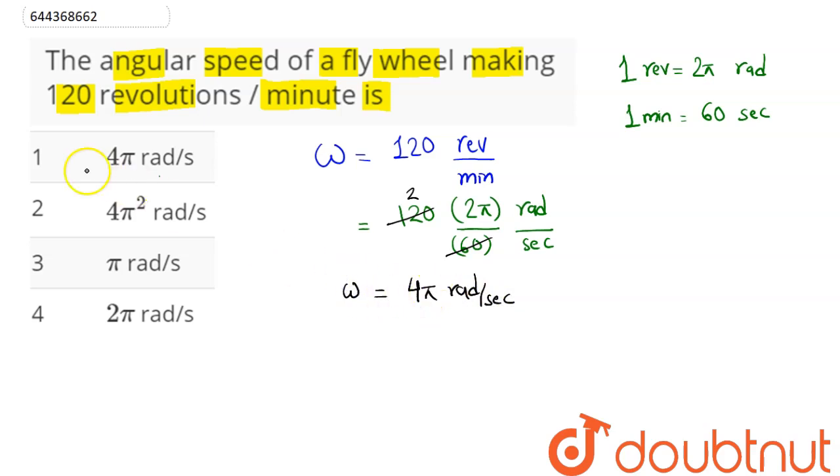is the angular speed of the flywheel making 120 revolutions per minute. So option number 1, 4π radian per second, is the correct answer. Hence we can say 1 is our answer.